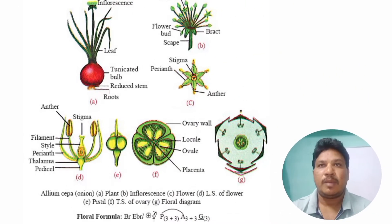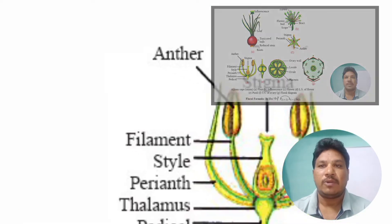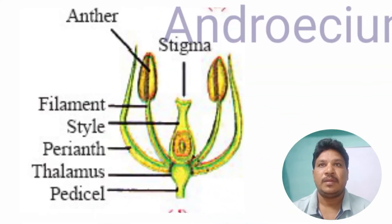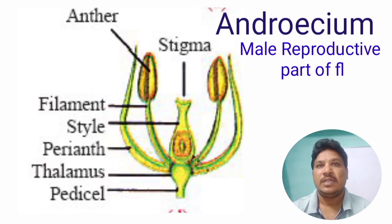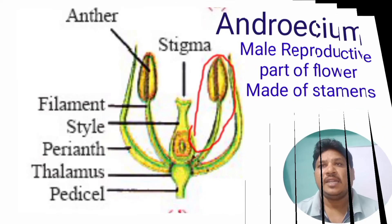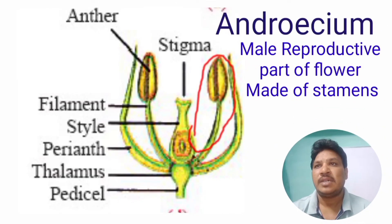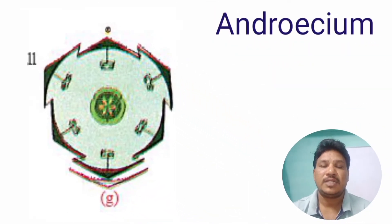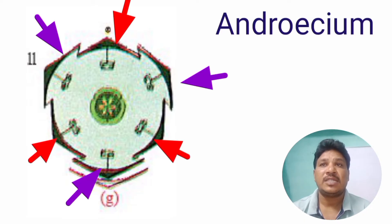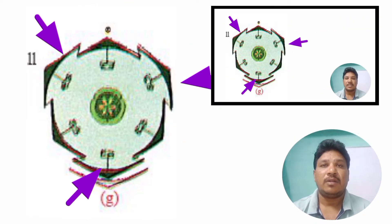Essential floral parts include androecium and gynoecium. Androecium is the male reproductive part of the flower. In Liliaceae family members, stamens are arranged in two whorls of three plus three — free or united — with a total of six stamens present.